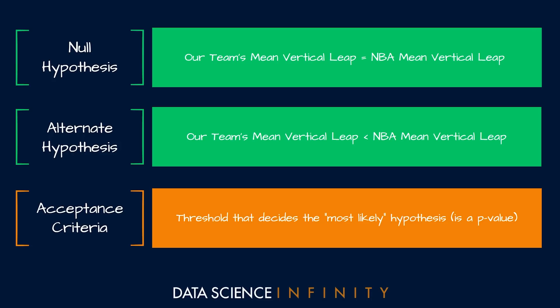For the acceptance criteria, we could put in whatever value we want depending on how much confidence we want in our findings. For ease, let's use the commonly used value of 0.05. This acceptance criteria value will act as the line in the sand around which we make our conclusion about which hypothesis we think is more likely.